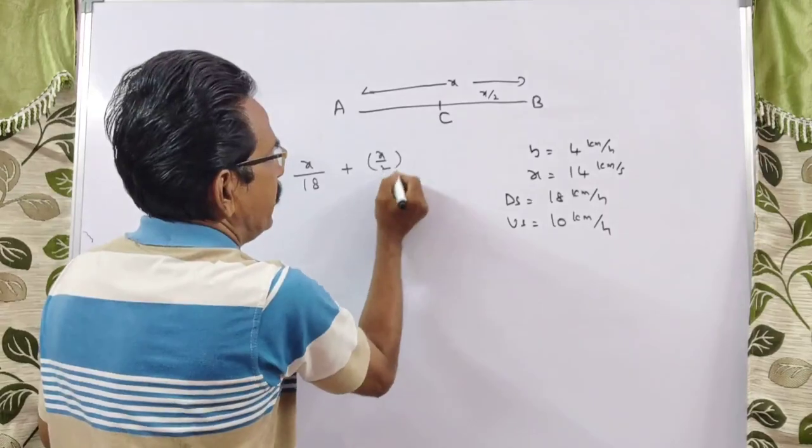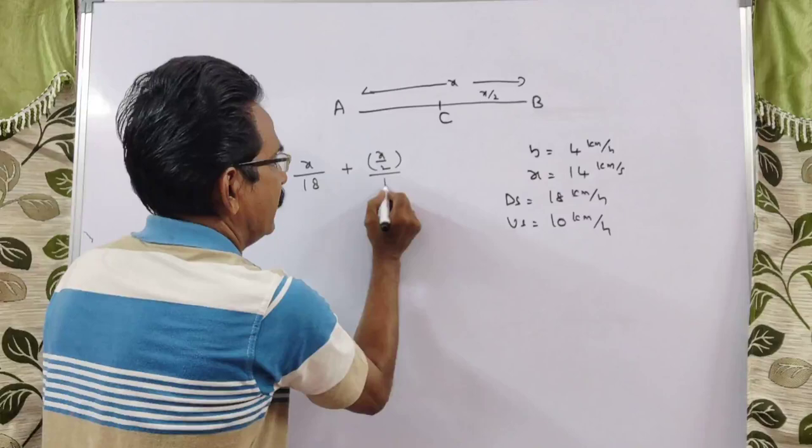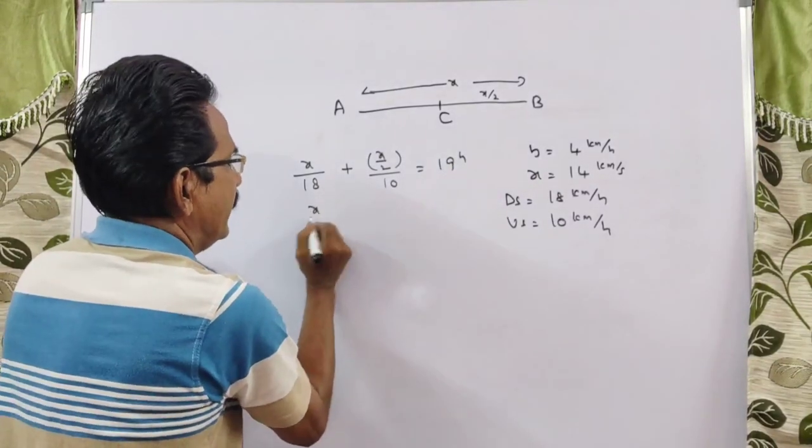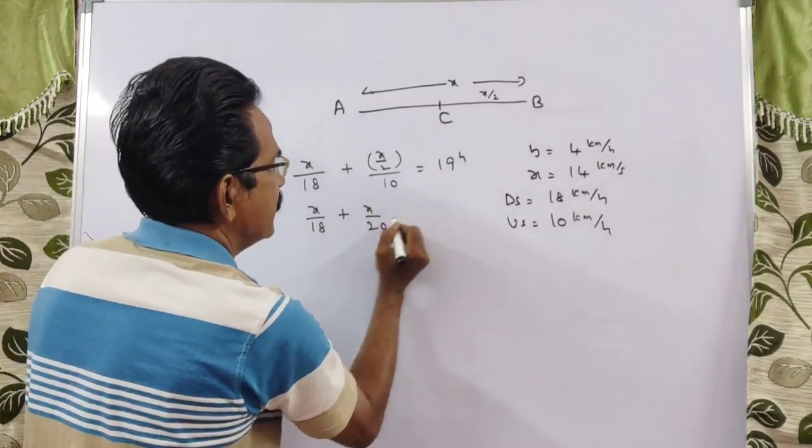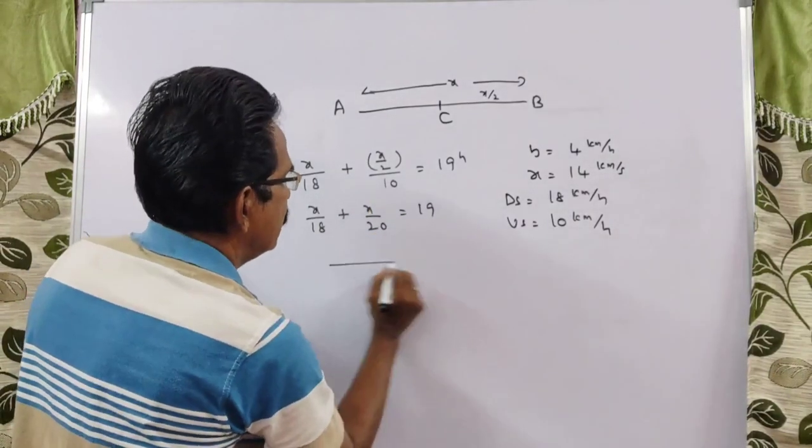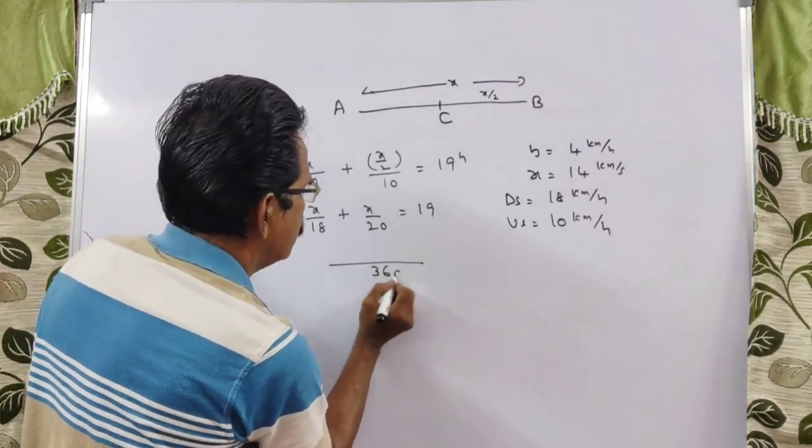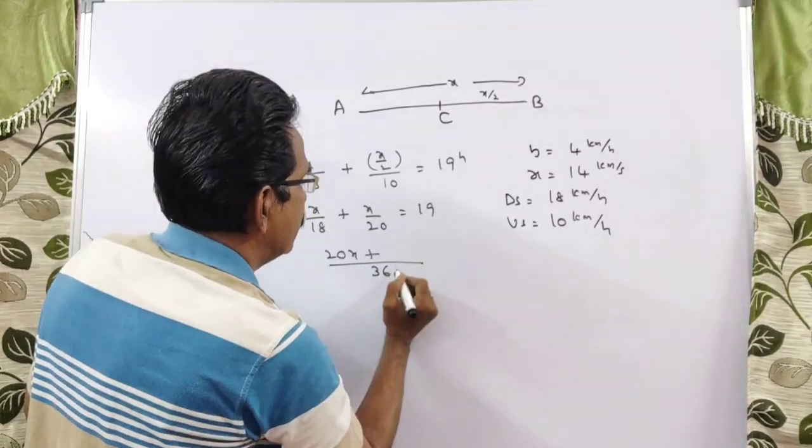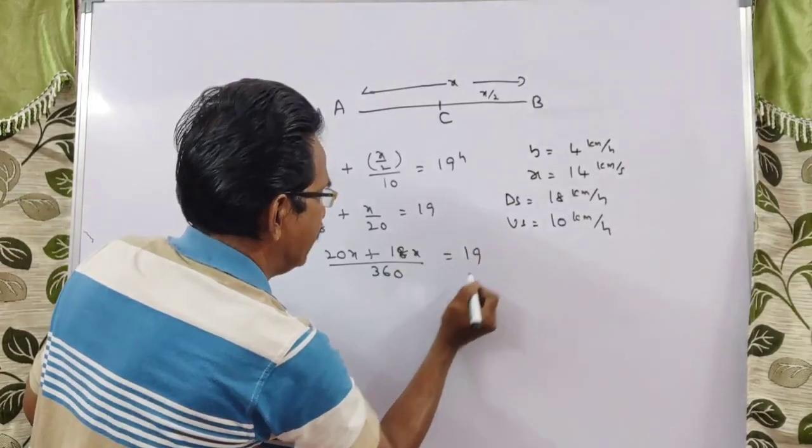This x by 2, the boat travels in upstream velocity 10. This total time is equal to 19 hours. So x by 18 plus x by 20 is equal to 19. LCM is 360, 20x plus 18x equals 19. 38x by 360 is equal to 19.